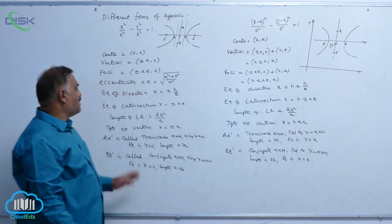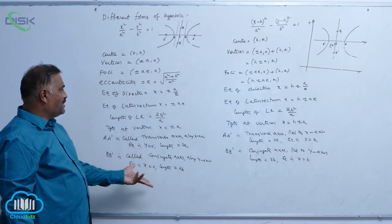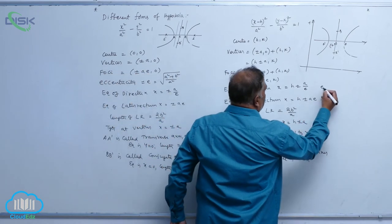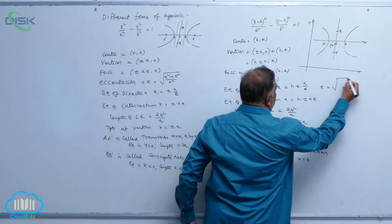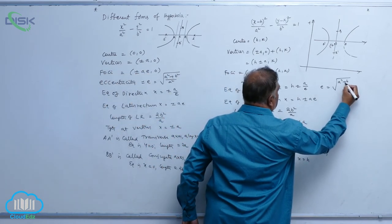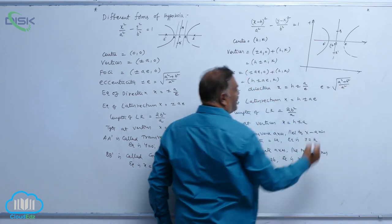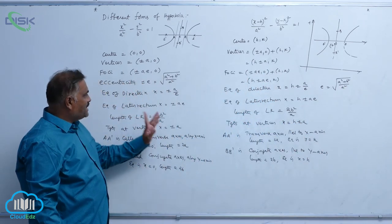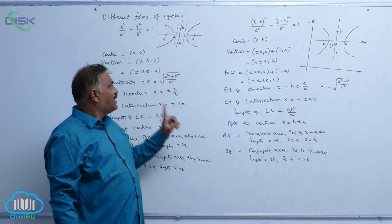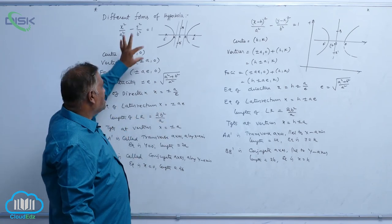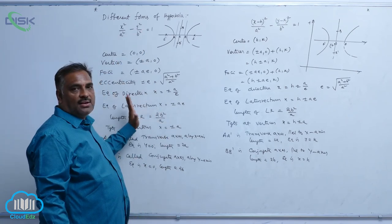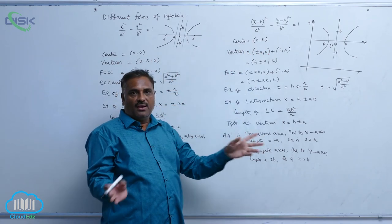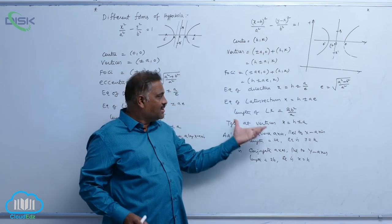Let us compare the two forms. Eccentricity does not change: e = √(a² + b²) / a. Everything else has only one change — (0, 0) is shifted from the original place to a new point (h, k), and that is why these changes have come.